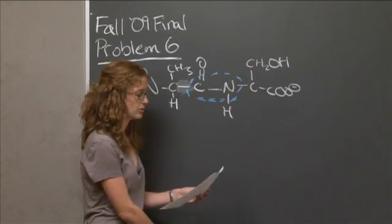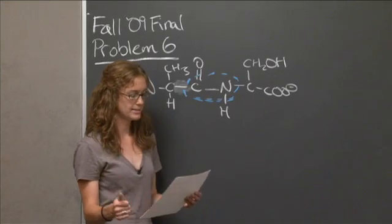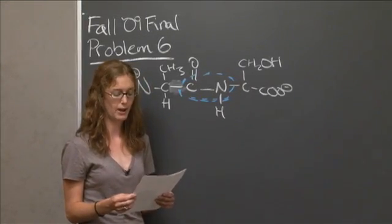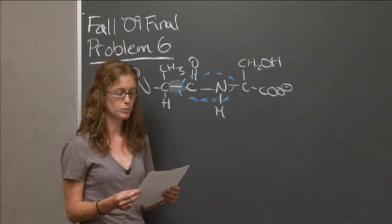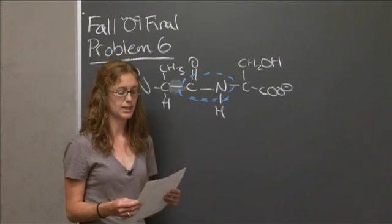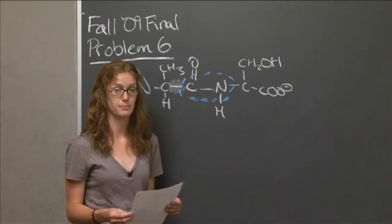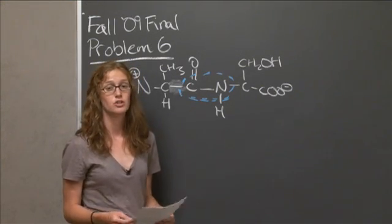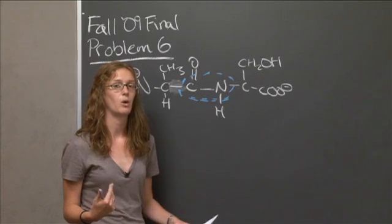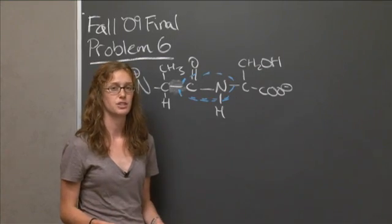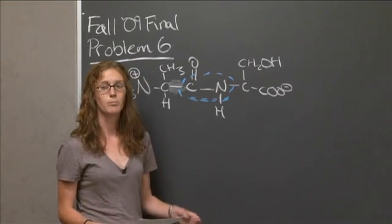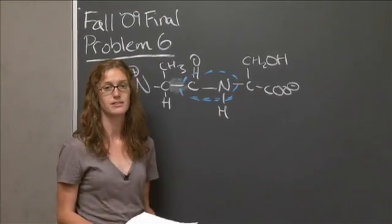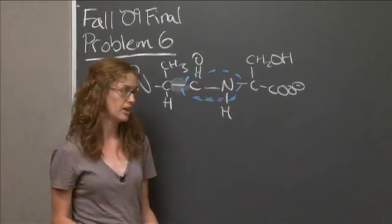Moving to part two, we are asked to draw the skeletal structure of each constituent amino acid as it would be present in an aqueous solution of extreme basicity, i.e. pH greater than 12. So before even starting to write, we want to think about what extreme basicity means. It means that both our amine group and our carboxylic acid group are going to be deprotonated.